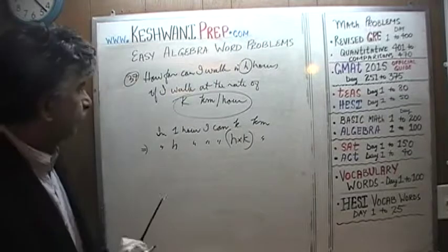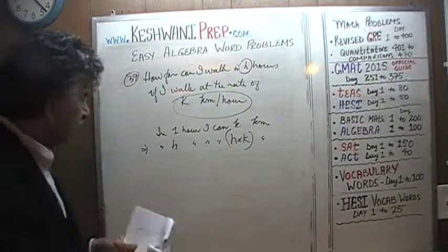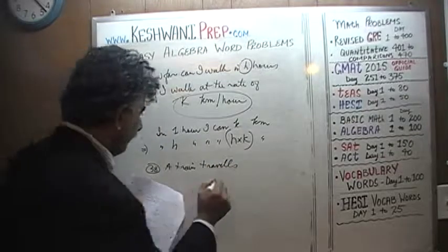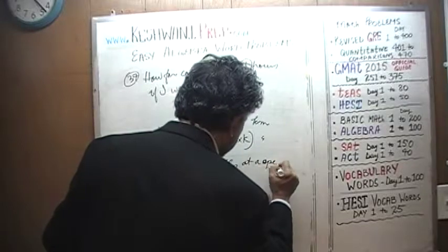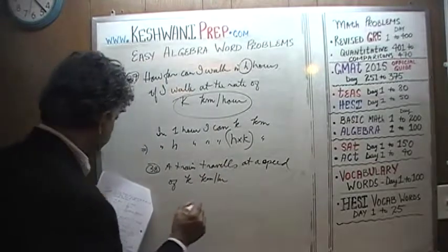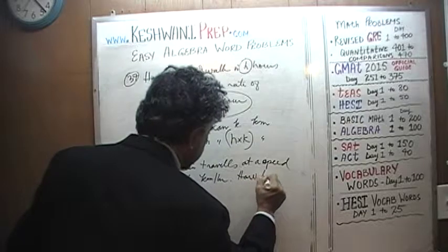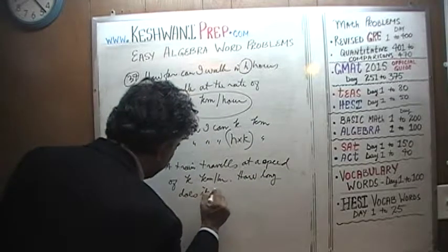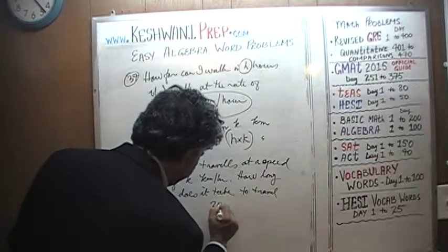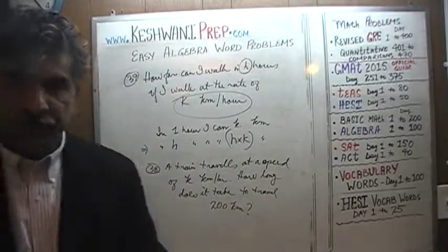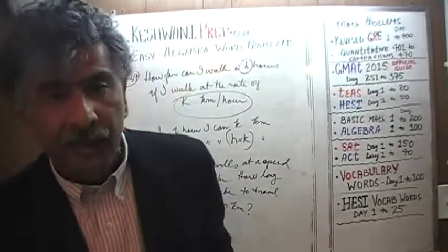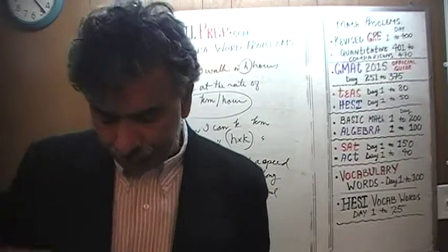Number 38. We are told that a train travels at a speed of K kilometers per hour. How long does it take to travel 200 kilometers? A journey of 200 kilometers will take how long if the train is going at a speed of K kilometers every hour? Let's find out.